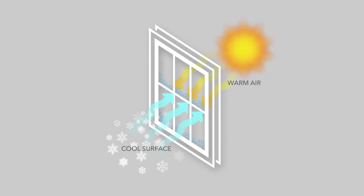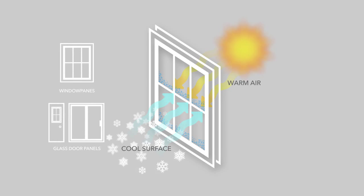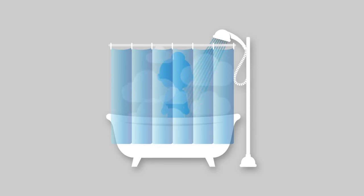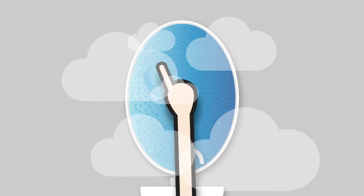Condensation forms when warm or humid air comes into contact with cooler surfaces such as window panes or glass door panels. When warm air inside your house comes in contact with a cool window, the water vapor in the air turns to liquid as it cools. That liquid is what you see on your windows. It's the same reason that glasses sweat and bathroom mirrors fog up when you take a hot shower.